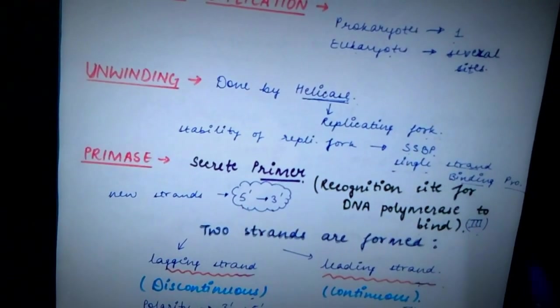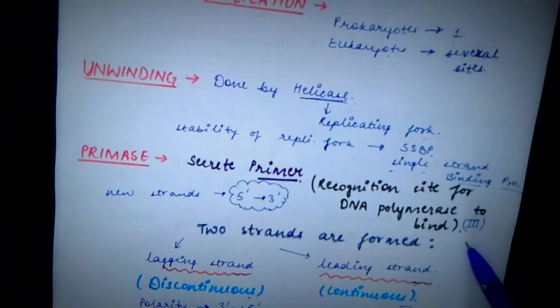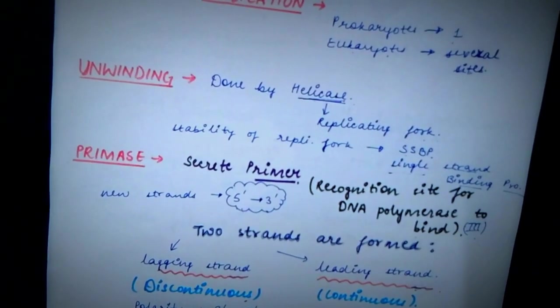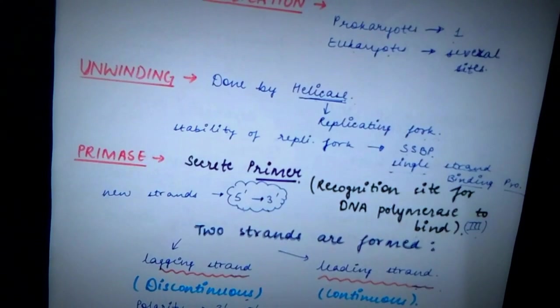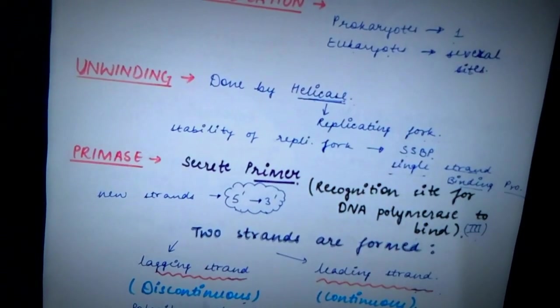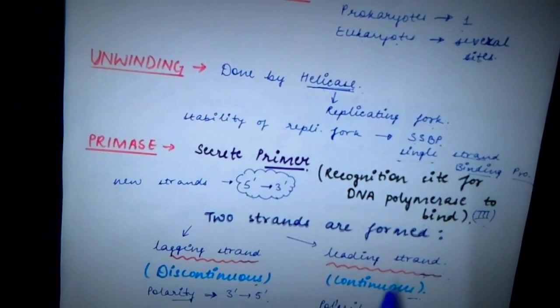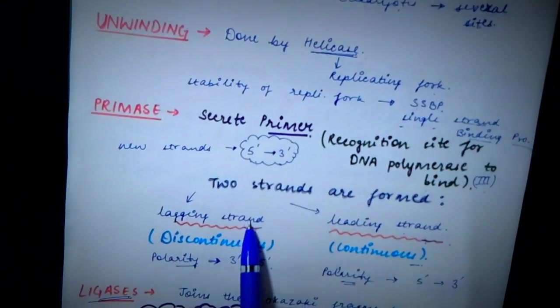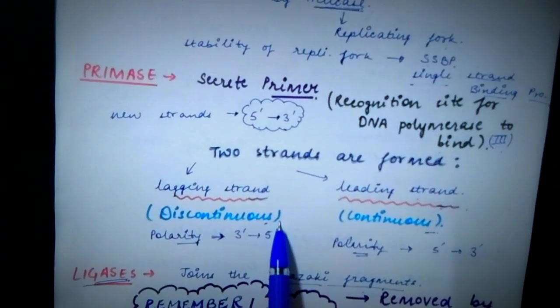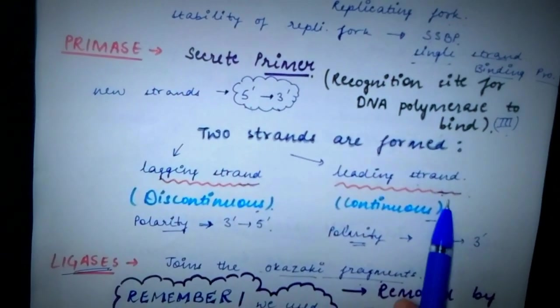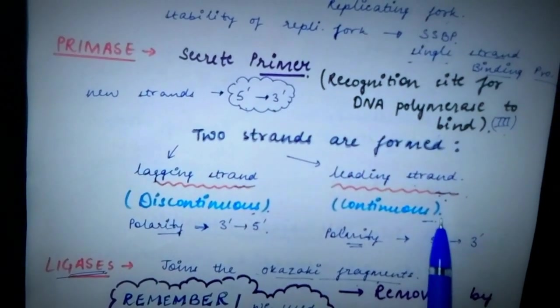We talked that DNA polymerase 3 is required. So the action of DNA polymerase 3 leads to the formation of two kinds of strands. These two kinds of strands are lagging strand and the leading strand. Lagging strand is also known as the discontinuous strand, whereas the leading strand is also known as the continuous strand.